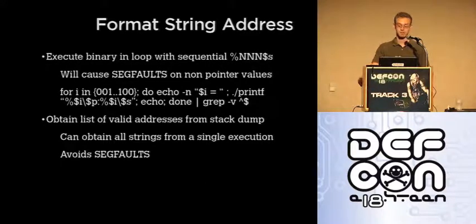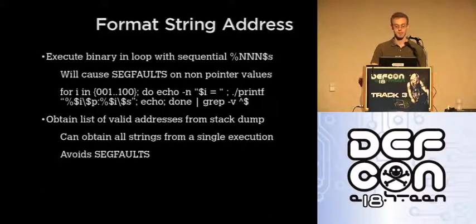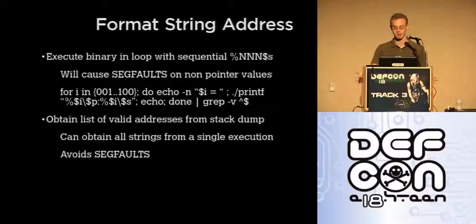The next thing we have to do: format string address. Now that we have the physical location on the stack, we want to find the pointer to that string. Two ways to do this as well. A sequential loop as we did before, which will cause seg faults in the case where the pointer at the given offset isn't actually a pointer but some data value. Which might not be good in certain environments — for example on a pen test if there are aggressive IDS systems. The other way, the more sneaky way, is given the stack dump, since we have a list of pointers already, we can parse that list for values that are on the stack and then obtain the offsets from those values only. This avoids seg faults, is a little bit more elegant, and allows us to basically dump all strings in just one run of the program.